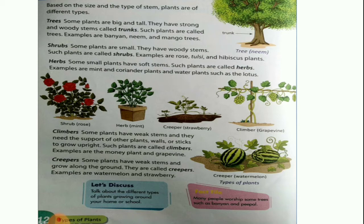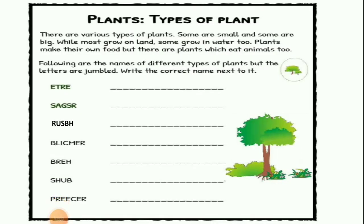I hope you all have watched the previous videos carefully. If you have not watched, go and watch them. This is the worksheet for you on types of plants. There are various types of plants — some are small, some are big. While most grow on land, some grow in water too. Plants make their own food, but there are plants which eat animals too. The following are the names of different types of plants but the letters are jumbled — write the correct name next to each.